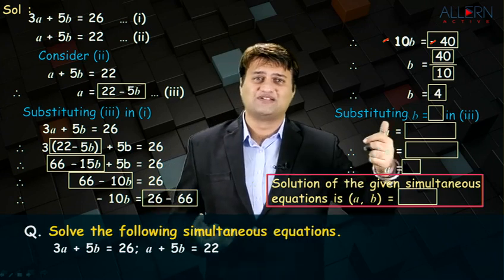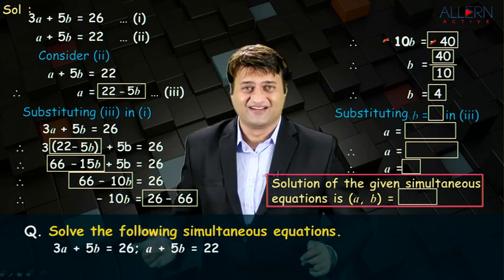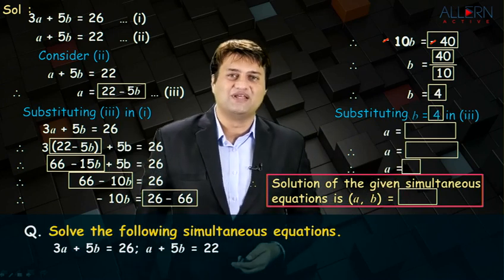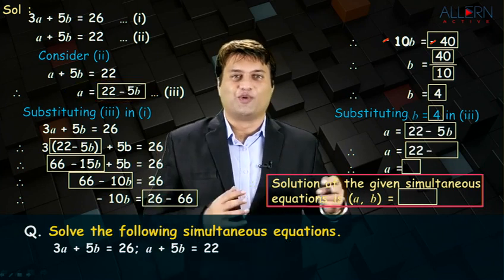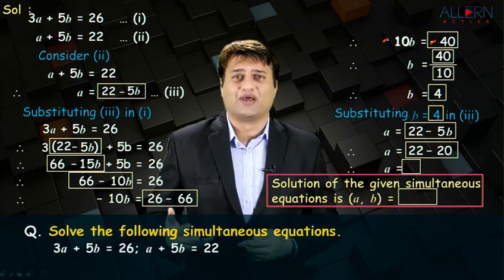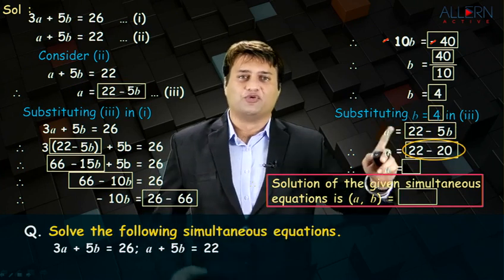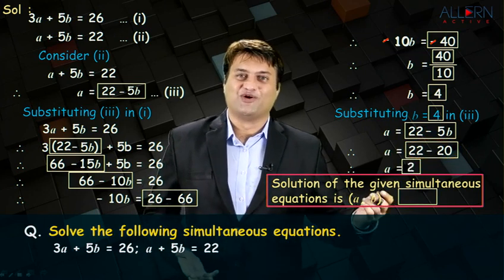The moment you get the value of b, substitute that value of b, preferably in equation number 3 in this method. Substituting b is equal to 4 in equation 3: a is equal to 22 minus 5b. In the place of b, you substitute 4. That's 22 minus 20. That is 5 into 4, 20. 22 minus 20 is 2. You get the value of a as 2.